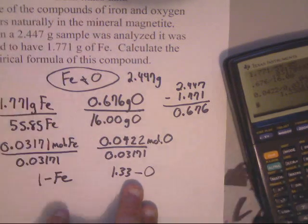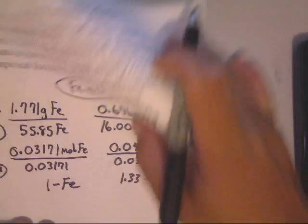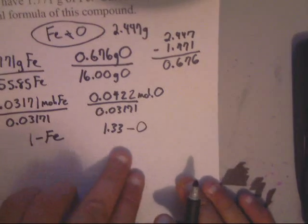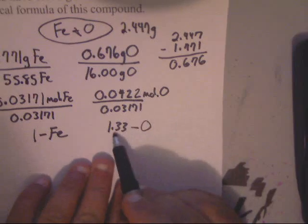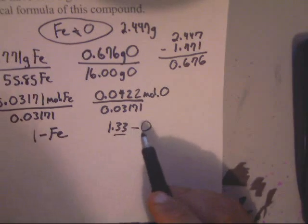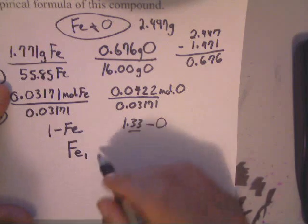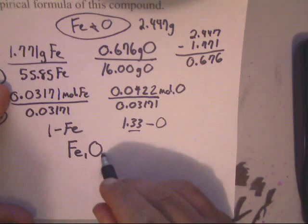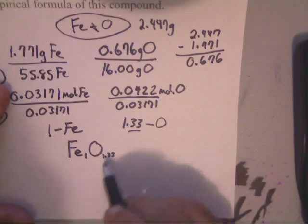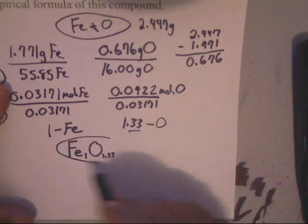Now, I'll explain some things here. These things become important because what that's saying is that our formula is Fe1O1.33. Now, we know that we can't write a formula like this. We know that it's wrong.